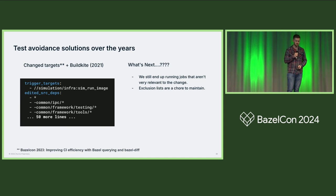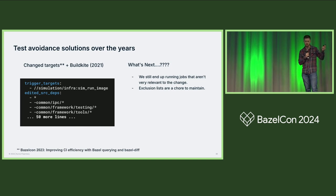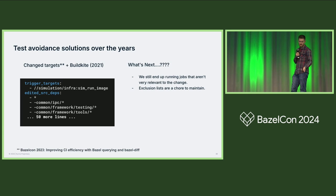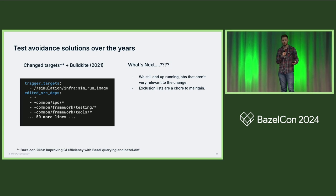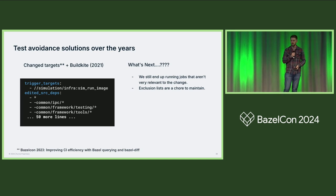Eventually, we settled on something where we use the targets that have changed to trigger our BuildKite jobs. We have our own internal system, very similar to BazelDiff, that we call changed targets. On each of our BuildKite jobs, we can say: run it when this target changes. We brought over all of those exclusion lists from our globs to try to avoid over-triggering, but maintaining these exclusion lists is very burdensome — it requires knowledge to be kept in sync with the build graph. More teams would just say, here's my test target, just run it when changes relevant to it are made.